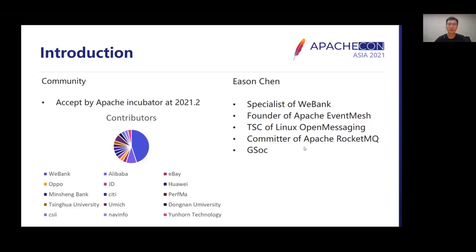EventMesh was produced from WeBank and accepted by Apache Incubator in February 2021. Nowadays, there are many contributors from different famous companies. My name is Ethan Chen, the founder of Apache EventMesh, specialist of WeBank Middleware Group.